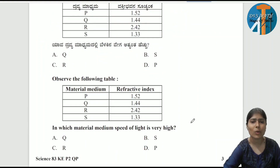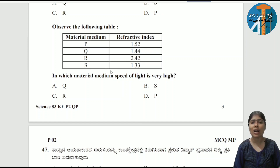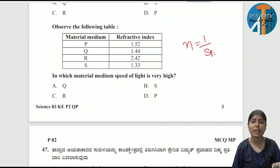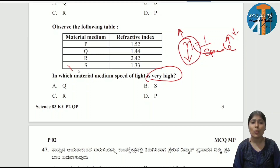Question number 46: observe the following table with materials P, Q, R, S having refractive indices 1.52, 1.44, 2.42, and 1.33 respectively. In which material medium is the speed of light very high? The relationship between speed of light and refractive index — the material with the lowest refractive index has the highest speed of light. The answer is option B.